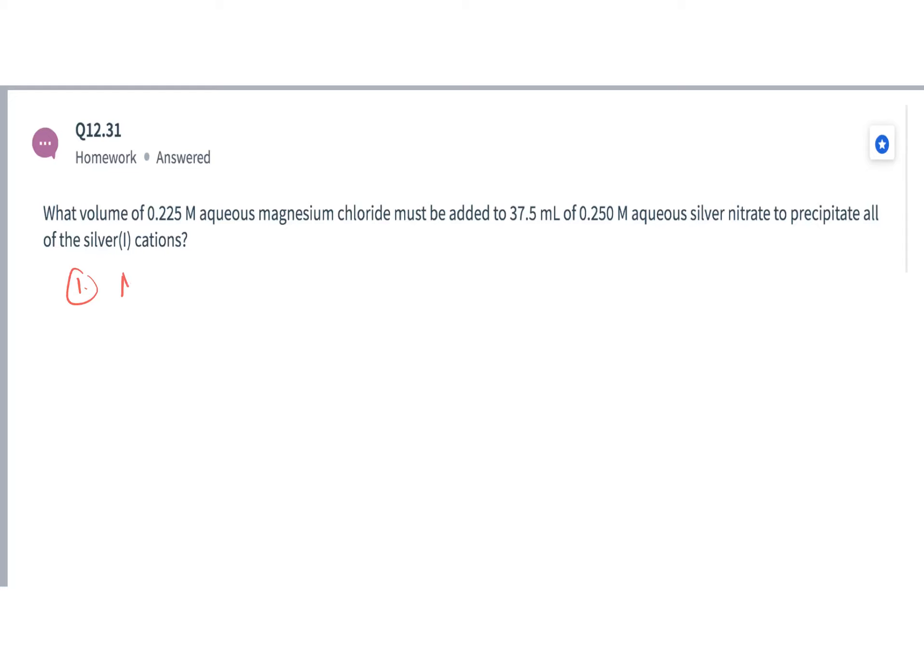So our reaction is going to look something like this: magnesium chloride aqueous is going to react with or be added with silver nitrate, AgNO3 aqueous, to produce silver chloride solid and magnesium nitrate.